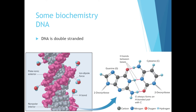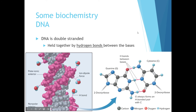DNA is double-stranded, meaning we have two individual covalently bonded chains interacting in the center. The two strands are held together by intermolecular forces only — specifically, the hydrogen bond. Because these hydrogen bonds are relatively strong, the strands stay together in a double helix. But these hydrogen bonds can be broken, allowing DNA to be copied, proteins to be made, and a variety of other processes to occur. It's due to these intermolecular forces — not covalent bonds — that makes DNA such a versatile molecule.